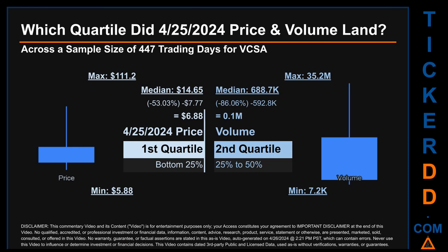Quartiles tell us about the spread of a data set by breaking it into quarters, just like how the median breaks the set into halves. Descriptively, VCSA has a median price of $14.65. Therefore, April 25, 2024's price was lower from that middle marker by 53.03 percent. The day's volume of 0.1 million was less than the median by 86.06 percent.